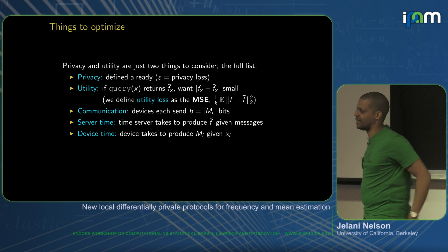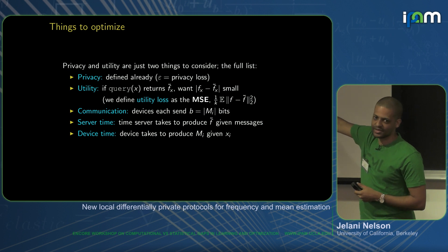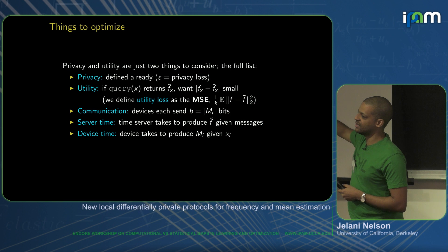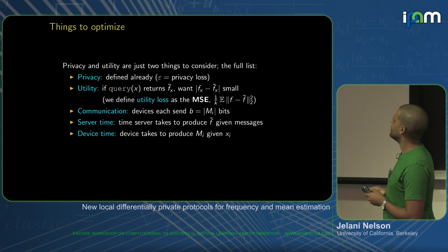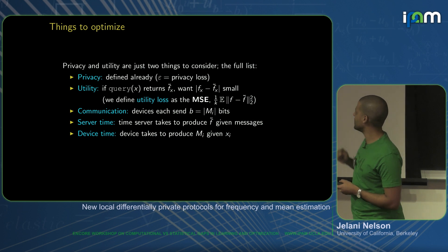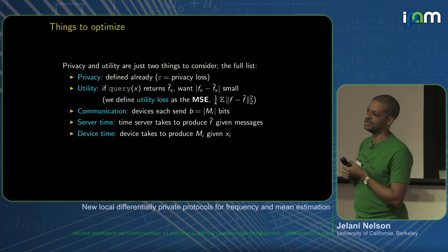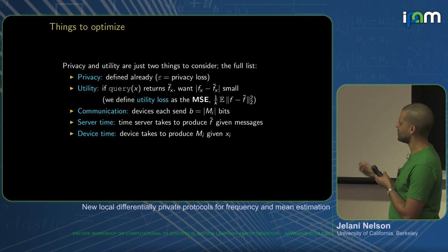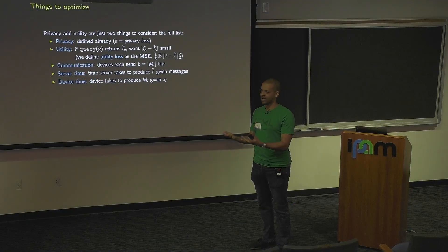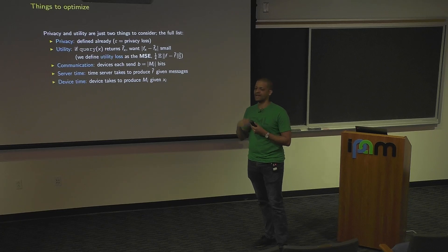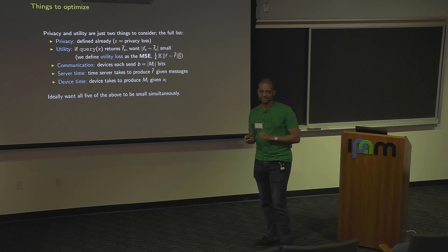As algorithm designers, there are five things we're trying to optimize. First, the privacy loss epsilon — smaller is better. Second, the utility loss (mean squared error). Third, communication — each device has to send a message in bits, ideally short. Fourth, server runtime — time to take all messages and run the reconstruction algorithm. Fifth, device runtime — how fast each device can generate its randomized message. Ideally you want all five small simultaneously, but there are tradeoffs.